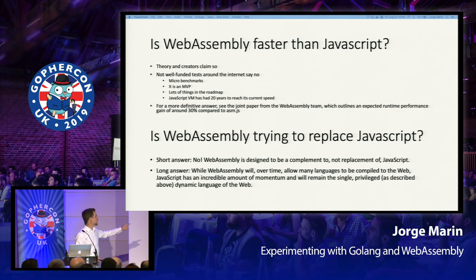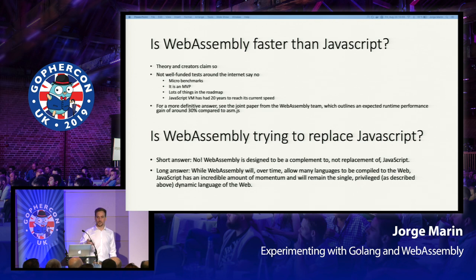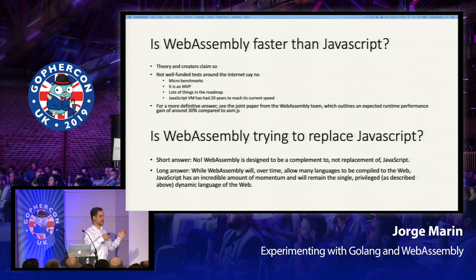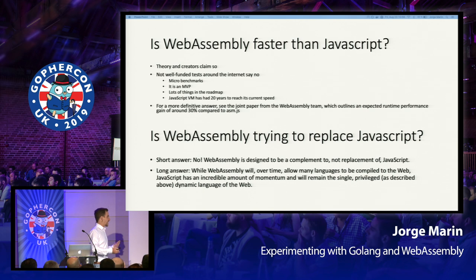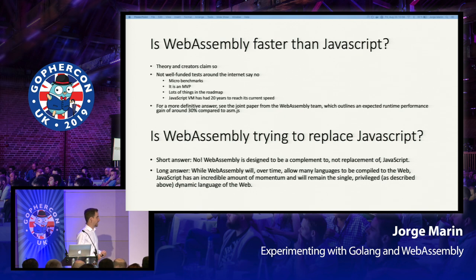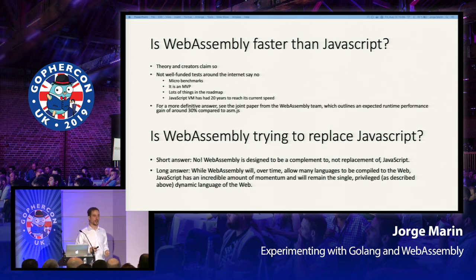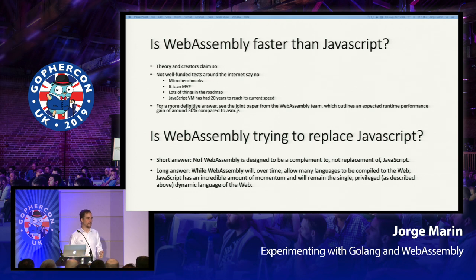Is WebAssembly trying to replace JavaScript? Short answer: no. WebAssembly is designed to be a complement to, not a replacement of, JavaScript. We are interfacing with JavaScript functions, and we need that interface because on HTML you can hook JavaScript functions to HTML fields but you cannot hook Wasm functions directly. The long answer is that over time WebAssembly is expected to become more and more useful, and while JavaScript will still be there, we'll start writing code in high-level pre-compiled languages like GoLang and executing them in the browser using WebAssembly.